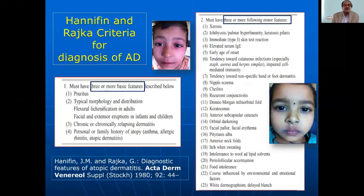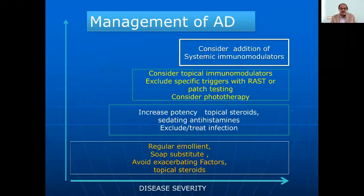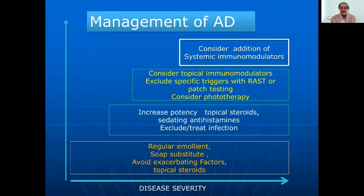The Hanifin-Rajka criteria are used for diagnosis, with three major features and approximately 23 minor criteria. Management depends on disease severity: regular emollients, soap substitutes, avoiding exacerbating factors, and topical steroids. For more severe cases, increase the potency of topical steroid, use sedating antihistamines at night, and use antibiotics if staphylococcal infection is found.